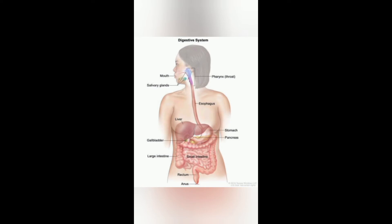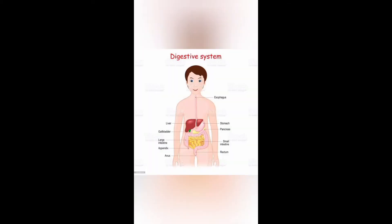First is teeth — we chew the food with the help of our teeth, so the food is broken down into smaller pieces and then it mixes with saliva in our mouth. Second is the food pipe — the chewed food travels to the stomach through the food pipe, as you can see in the picture.